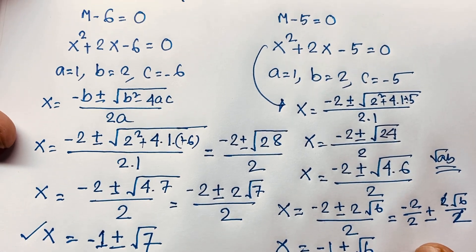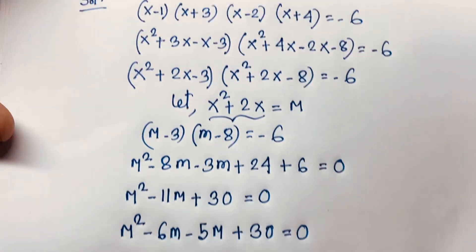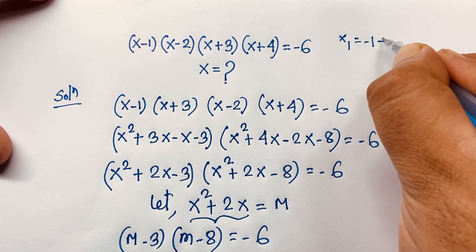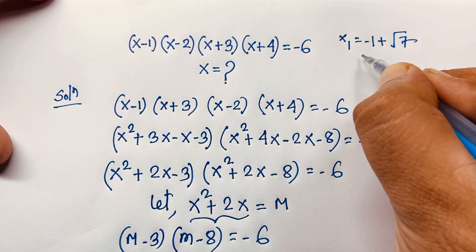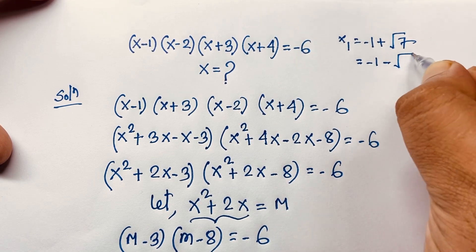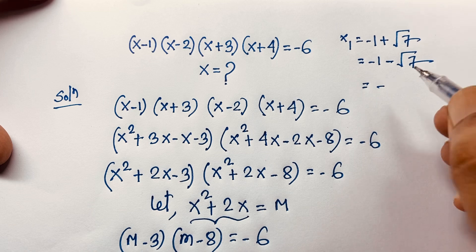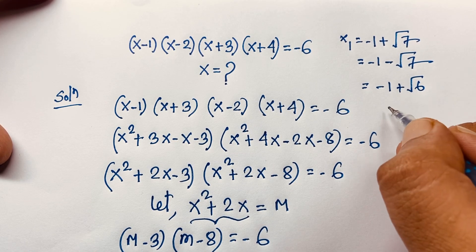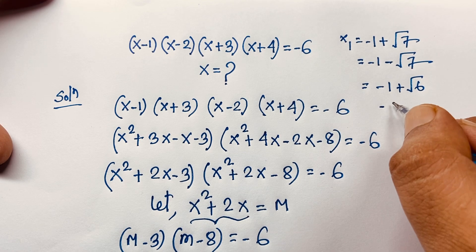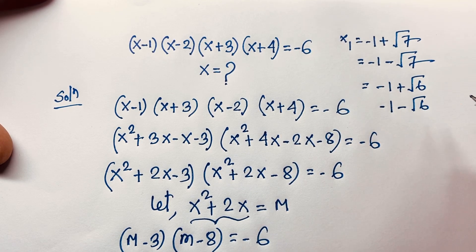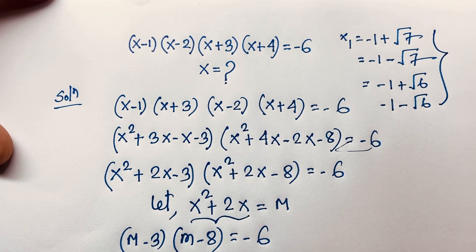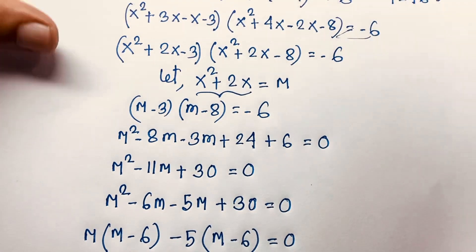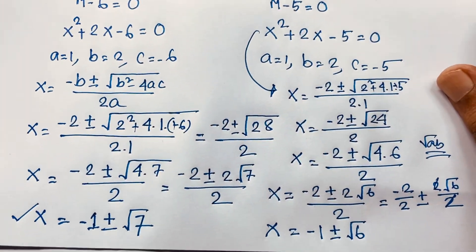So we find four solutions to this problem: x₁ equals negative 1 plus square root 7, x₂ equals negative 1 minus square root 7, x₃ equals negative 1 plus square root 6, and x₄ equals negative 1 minus square root 6. Thank you — if you enjoyed this video, please subscribe for more interesting videos. Goodbye, take care!